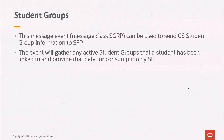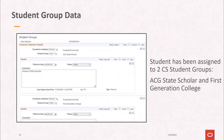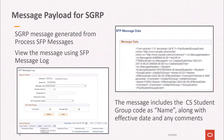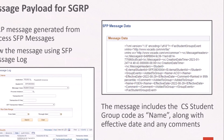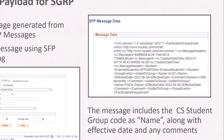The Student Groups message allows you to send CS student groups data for consumption by SFP. These messages are logged with a message class of SGRP. In this example, a student has been assigned to two student groups in CS: ACG State Scholar and First Generation College. The payload for the student groups message includes the CS student groups code as name, along with effective date and any comments that were added to the student groups entry in CS.